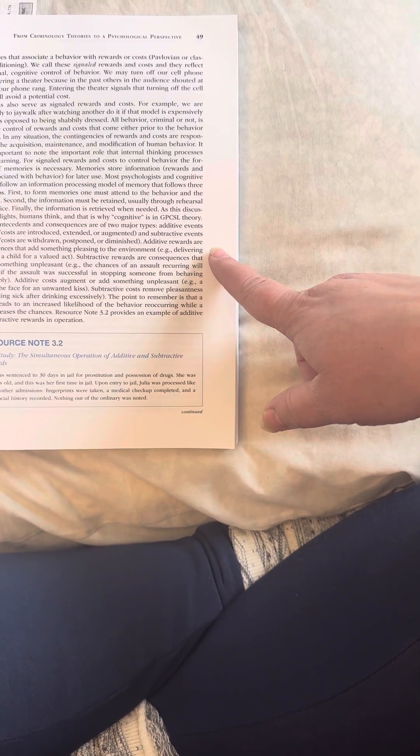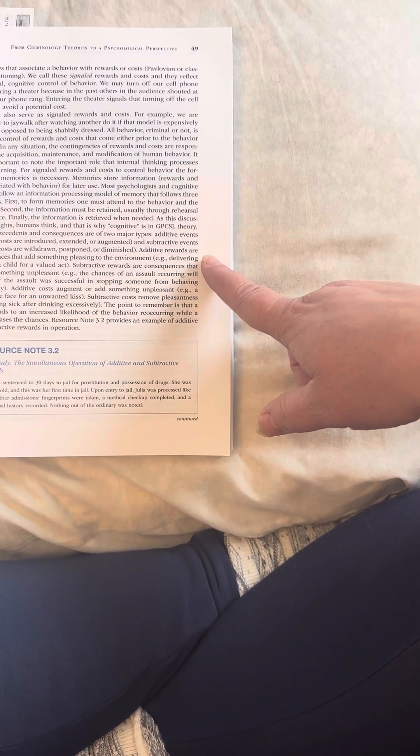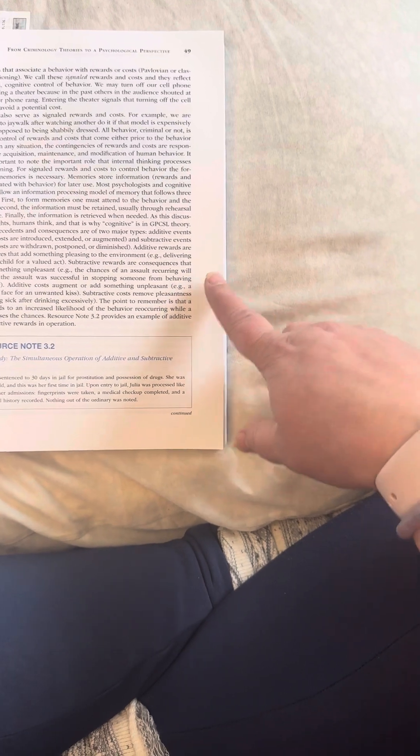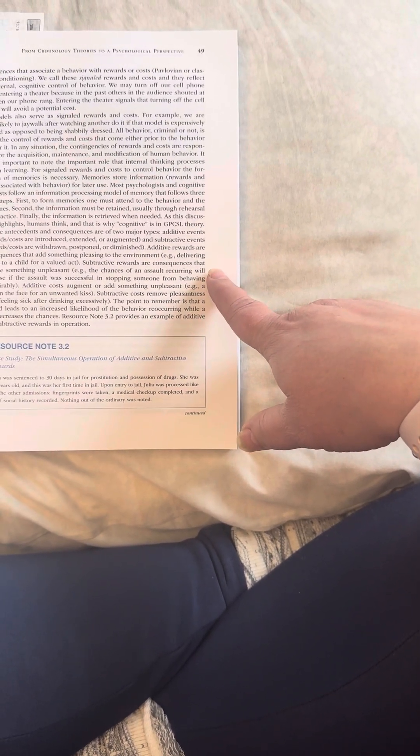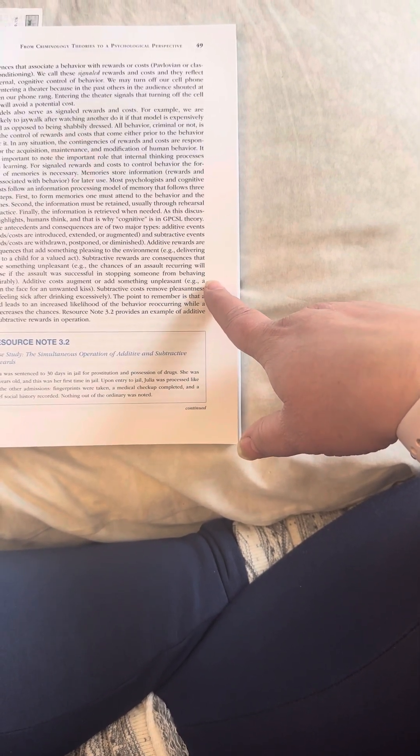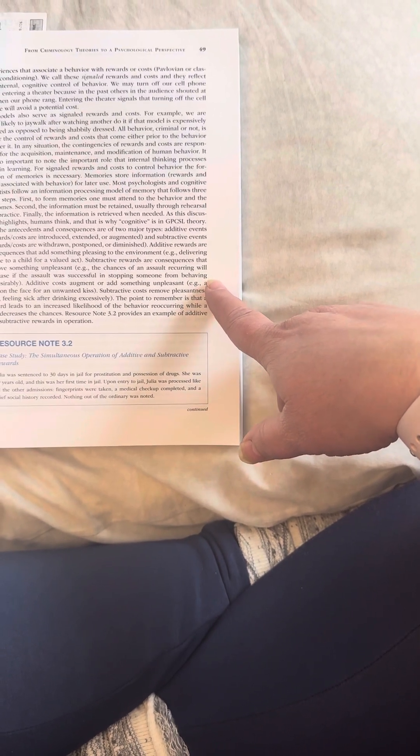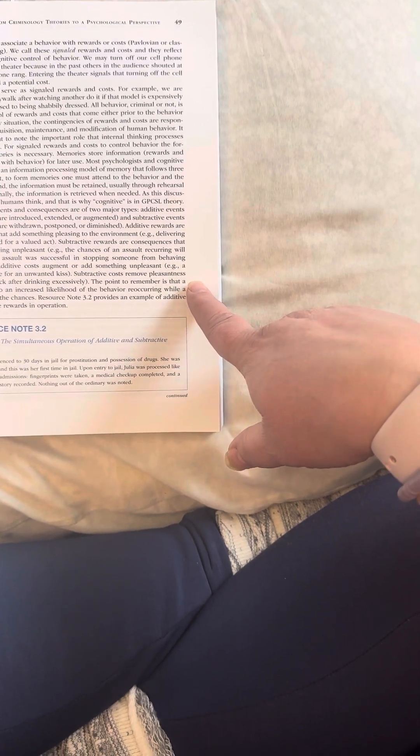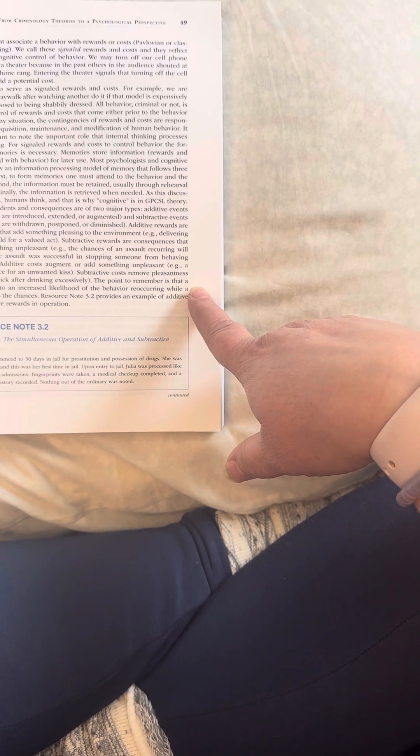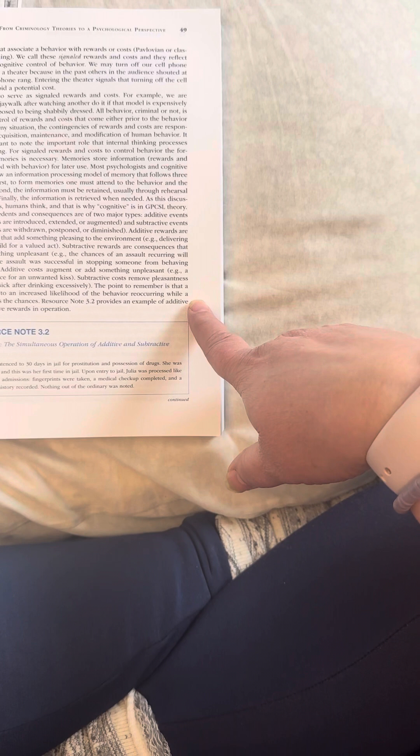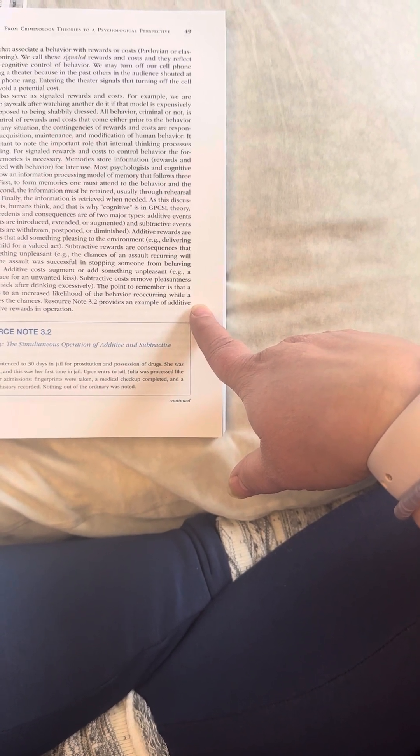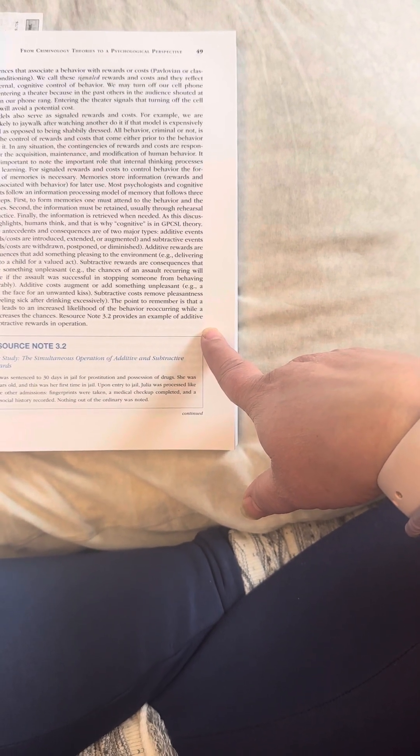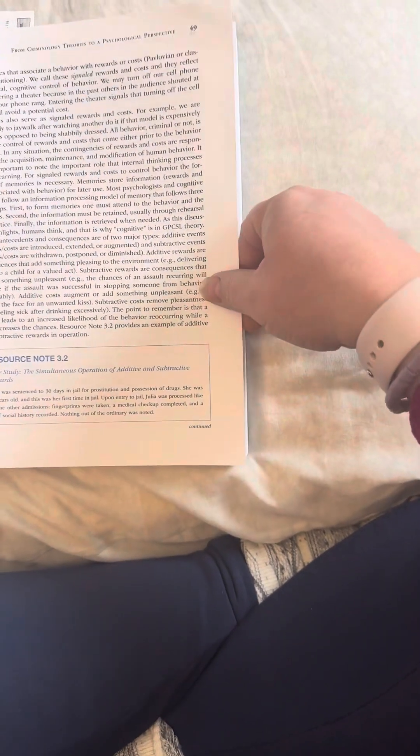The antecedents and consequences are of two major types. Additive events, rewards, costs are introduced, extended, and augmented. And subtractive events, rewards, costs are withdrawn, postponed, or diminished. Additive rewards are consequences that add something pleasing to the environment. Example, delivering praise to a child for a valued act. Subtractive rewards are consequences that remove something unpleasant. Example, the chances of an assault reoccurring will increase if the assault was successful in stopping someone from behaving undesirably. Additive costs augment or add something unpleasant. Example, a slap on the face for an unwanted kiss. Subtractive costs remove pleasantness, feeling sick after drinking excessively. The point to remember is that a reward leads to an increased likelihood of the behavior reoccurring while a cost decreases the chances. Resource Note 3.2 provides an example of additive and subtractive rewards in operation. Resource note 3.2, here is a case study. Should you wish to pause? There we go. Sorry about that. And here is the second part of the case study. So you can read that at your leisure.